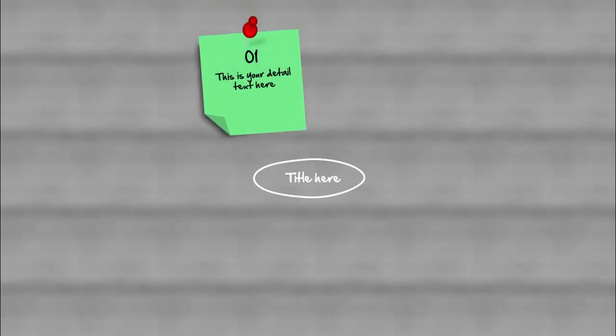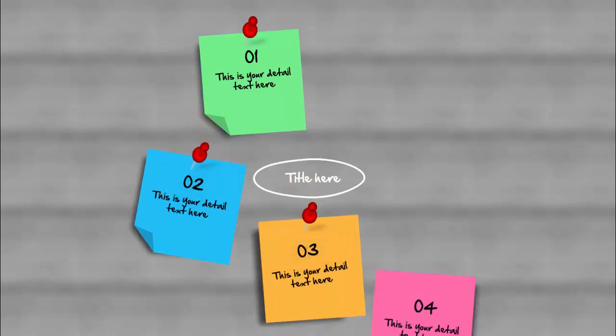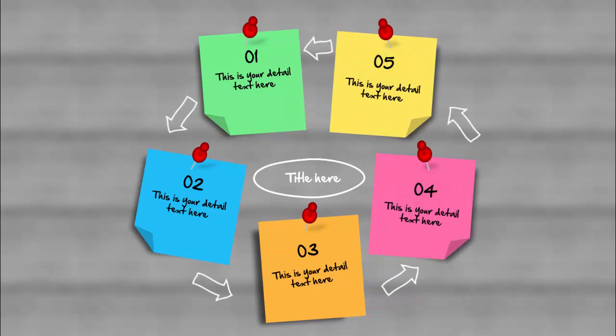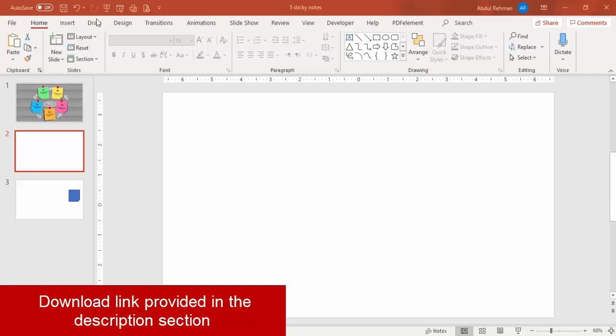We have started a new series called the Quick Design Series and our aim is to complete the tutorials within five to six minutes, so you don't need to spend much time preparing the presentation. This is the first video in the series. When I click, you can see a sticky note or post-it comes with a push pin, then the second, third, fourth, and fifth options appear. Let's see how to do this in PowerPoint — add a new slide.